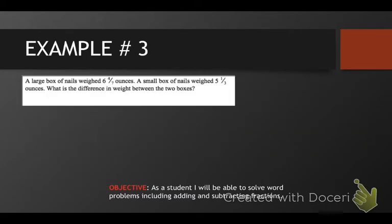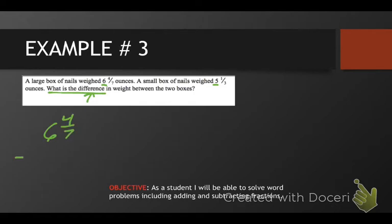Example number three. A large box of nails weighed six and four-sevenths ounces. A small box of nails weighed five and one-third ounces. What is the difference in weight? In this case we have our first subtraction problem. How do I know that? Because of the word 'difference' — when we see the word difference, we definitely know that we're going to do subtraction. I've got to make sure I have the biggest one first. I have six and I have five — the biggest one is six. So we're going to put that one first: six and four-sevenths minus five and one-third. We need a common denominator.